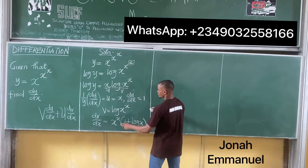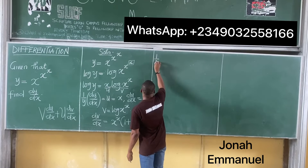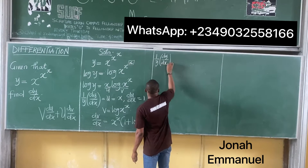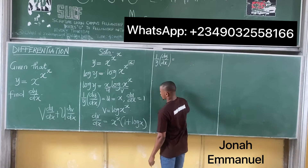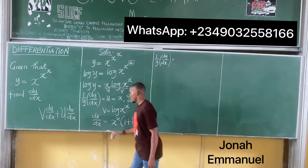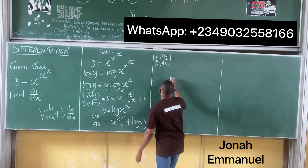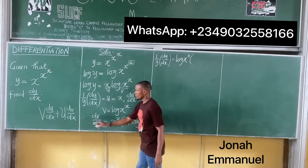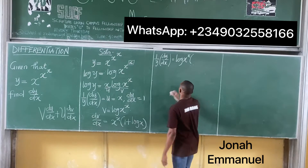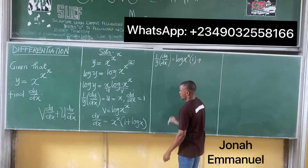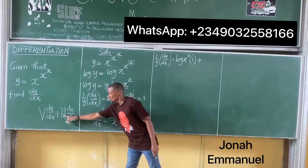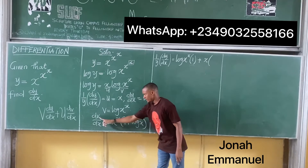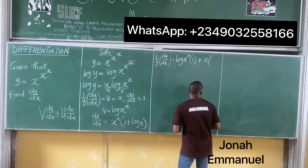Applying the product rule, which is v·(du/dx) + u·(dv/dx), we get: 1/y · dy/dx equals log(x^x)/x times 1, plus x times (1 + log x)/x.